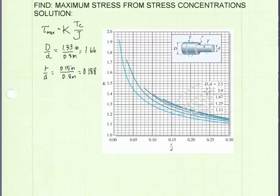First we use our ratio of large diameter to small diameter. We have 1.66, which is very close to 1.67, which represents this line shown on the chart. That's the line we're going to be using to get our K value. We will start at the bottom of the chart and come in at our value for r over little d. We had a value of 0.188.